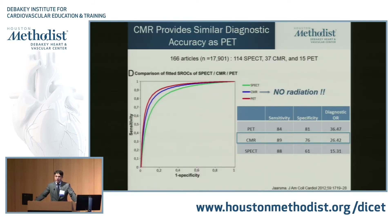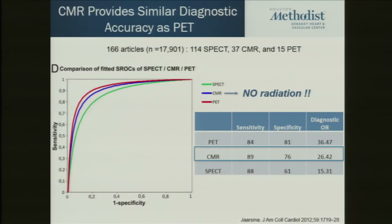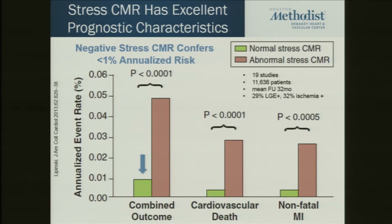How good is this technique? It's been studied in multiple trials. This was a meta-analysis of almost 166 articles comparing it to nuclear techniques including PET and SPECT, and the diagnostic accuracy is just as good as PET. It has one very important advantage: there is no radiation involved. Regarding long-term prognosis, this has been studied in 19 studies of almost 11,000 patients. If the stress test is normal, patients have less than 1% risk of cardiac events over the following year. As the stress test becomes abnormal, the risk markedly increases for cardiovascular death and myocardial infarction.